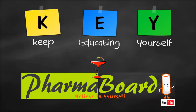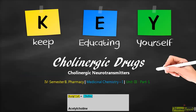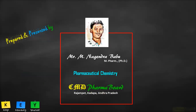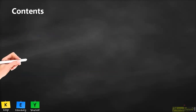Welcome aboard to Pharma Board. Today we are going to see the topic related to the unit cholinergic drugs. As an introduction, we need to know primarily about the cholinergic neurotransmitters and their receptors and distribution. The contents of today's topic include introduction to cholinergic neurotransmitters.